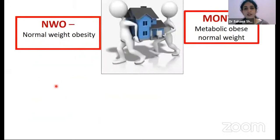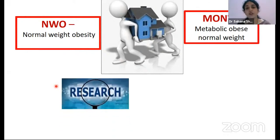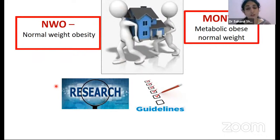The important take-home message is that we must be aware of these phenotypes — normal weight obesity and metabolically obese normal weight. There is a need for more research on prevalence, associations, and risk factors. There are currently no clear-cut guidelines on diagnostic cutoffs or management of these individuals, and there is a requirement for ethnicity-specific cutoffs and clinical guidelines. With this, I would like to end my talk and I would be happy to take any questions. Thank you.